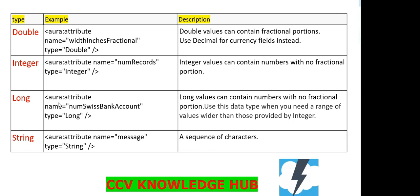The next one is Long. Long values can contain numbers with no fractional portions. Use this data type when you need a range of values wider than those provided by Integer. The syntax is: aura:attribute name equal to some field name, type equal to Long.